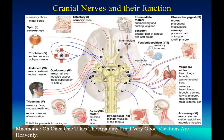Cranial nerve VIII is the vestibulocochlear nerve, involved in equilibrium and hearing. Cranial nerve IX is the glossopharyngeal nerve — glossal meaning tongue — going to the tongue musculature; its sensory component covers the tongue, tonsils, and pharynx. Cranial nerve X is the very important vagus nerve, a large nerve dipping into the thoracic and abdominal regions, controlling the heart, lungs, bronchi, and GI tract — called the wandering nerve, with both motor and sensory functions. Cranial nerve XI is the accessory nerve, going to the sternocleidomastoid. Cranial nerve XII is the hypoglossal nerve. You need to know all 12 nerves and their functions.